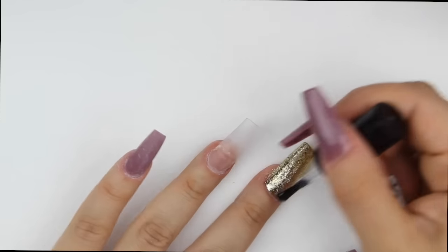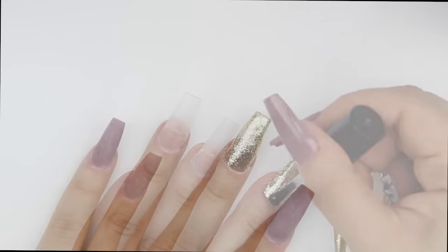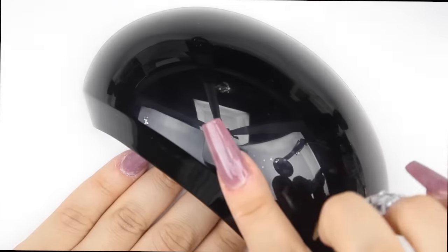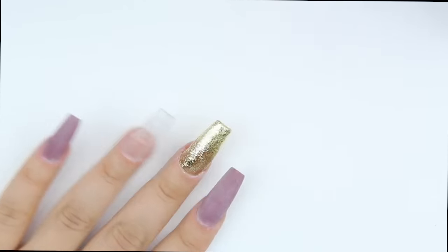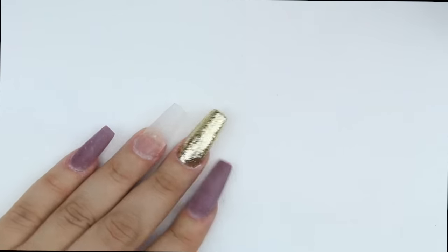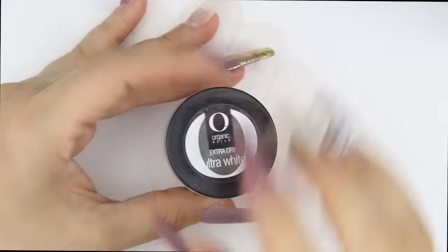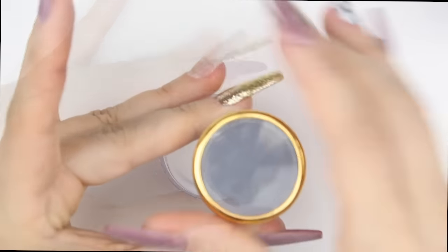I cured that in the LED lamp and now I'm adding Nova Inks UV shine top coat just to give it that extra shine and protect it. It's beautiful and doesn't need anything else on top. Now I'm gonna do some 3D nail art on the ring finger.